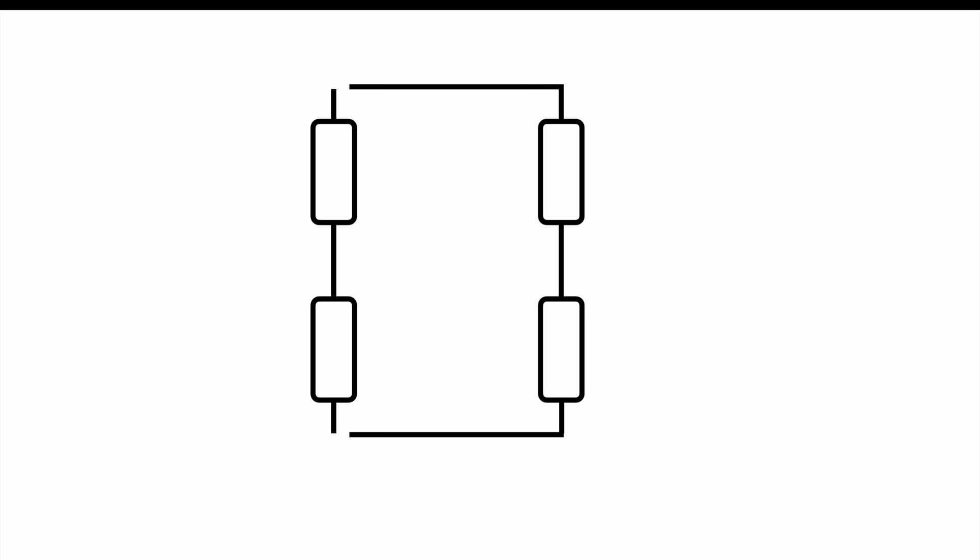The Wheatstone bridge consists of two bridge branches which are connected to each other side by side. The bridge itself is connected to a voltage supply, in this example at the top to plus and at the bottom to minus.